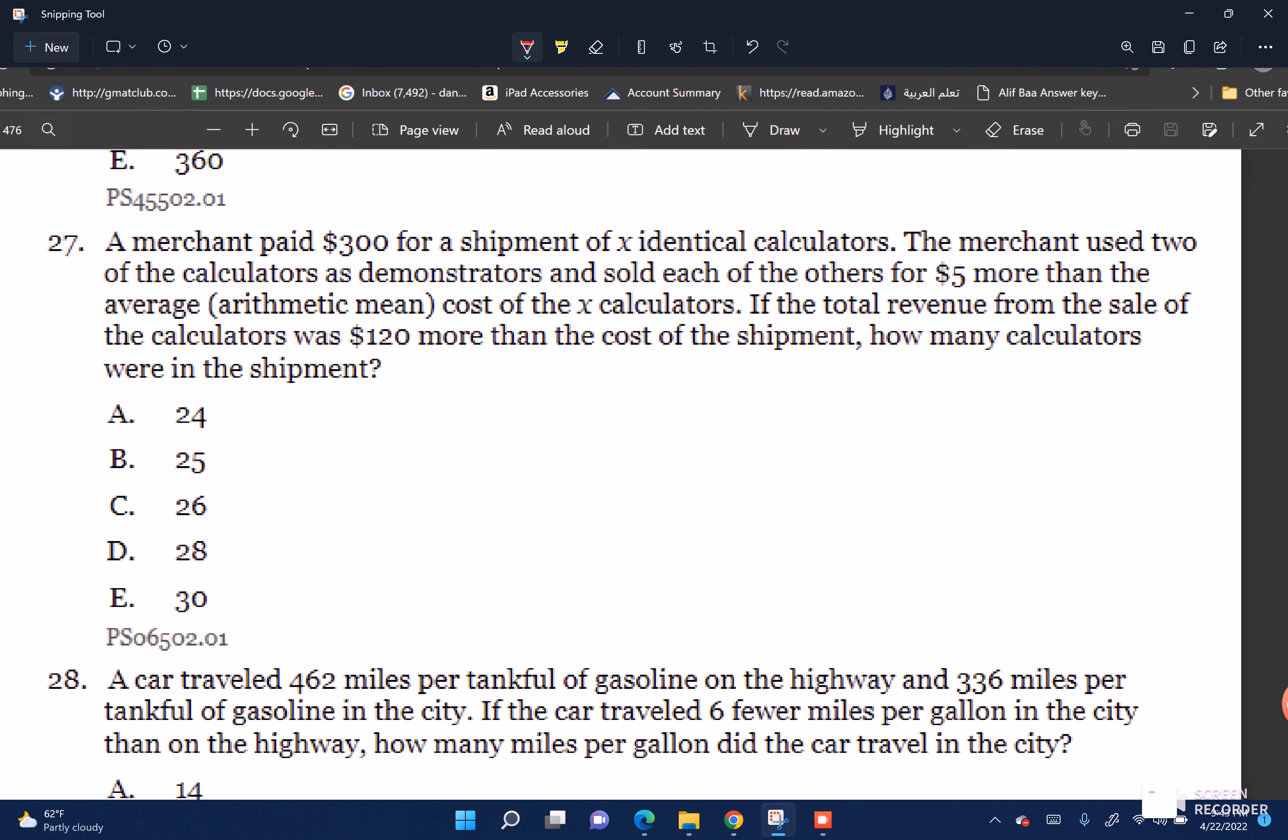A merchant paid $300 for a shipment of X identical calculators. The average cost per calculator would be 300 over X. The merchant used two calculators as demonstrators and sold each of the others for $5 more than the average cost. The total revenue from the sale was $120 more than the cost of shipment. How many calculators were in the shipment?